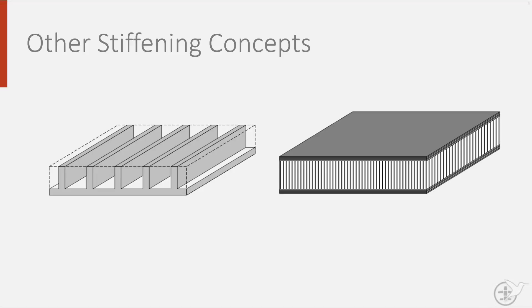Today I will be discussing the concept of monocoque structures, another stiffening concept. These are structures where the skin supports all the load as well as providing the stiffness. It is characterized as being one single piece.